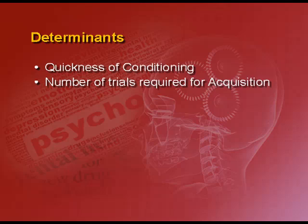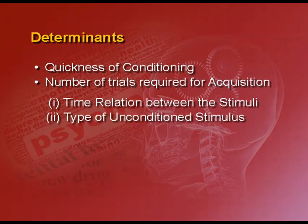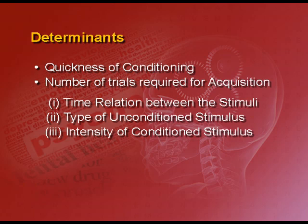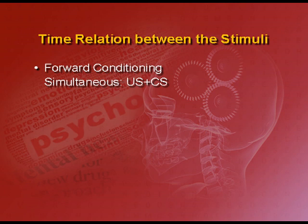Now let us see some of the determinants of classical conditioning. These are the factors determining the quickness with which conditioning is established, or the number of trials required for the acquisition of a conditioned response. The first determinant is the relation of time between various stimuli, the second is the type of unconditioned stimulus, and the third is the intensity of the conditioned stimulus. Regarding time between stimuli: how much time has lapsed between the US and CS determines how quickly learning would take place. These are usually of four types. Forward conditioning is where the unconditioned stimulus is presented before the conditioned stimulus — for example, the bell and the food.